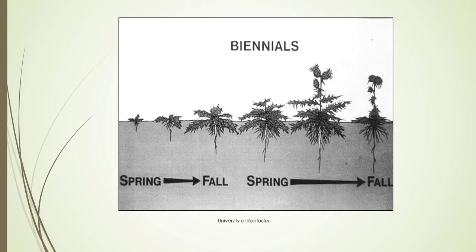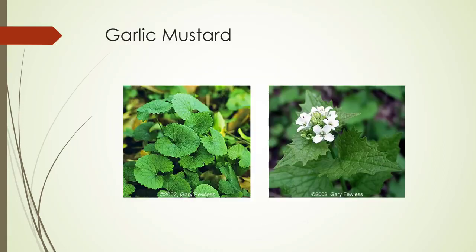Biennials will have a rosette in the spring and stay in rosette form into the fall. Then in the spring of the following year, it will start to flower and go to seed — sometimes it's a third year. Biennials aren't perfect; sometimes they are two to three years. The time to manage them is in the first year before they have a chance to flower. Garlic mustard is an example of this.